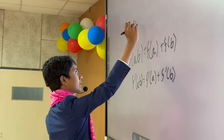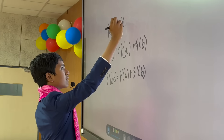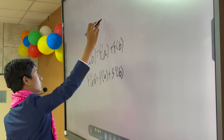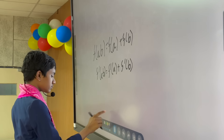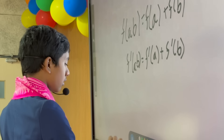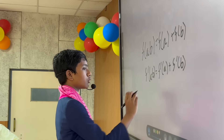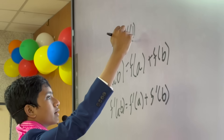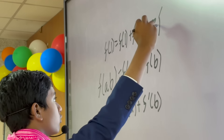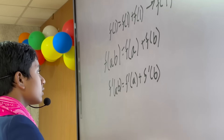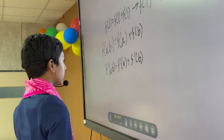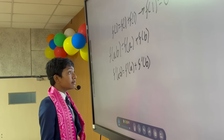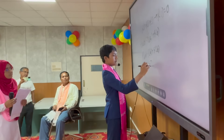What I am going to do instead is test out both equal to 1: f(1) = f(1) + f(1), which obviously means that f(1) = 0. But of course, if a = b, then a·b = a². So I am going to say f(x²) = 2f(x).